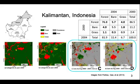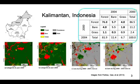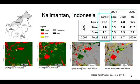Map D shows forest gain in green, while map C shows the corresponding losing categories in red for bare and yellow for grass. Map C shows forest loss in green, while map D shows the corresponding gaining categories in red for bare and yellow for grass. The contingency table in the upper right shows the percent of spatial extent for the three categories: forest, bare, and grass. The first column shows that forest persistence accounts for 77% of the spatial extent. The transition from bare to forest accounts for 4%, and the transition from forest to grass accounts for 1%. The first column shows the gains of forest, whereas the first row shows the losses of forest.